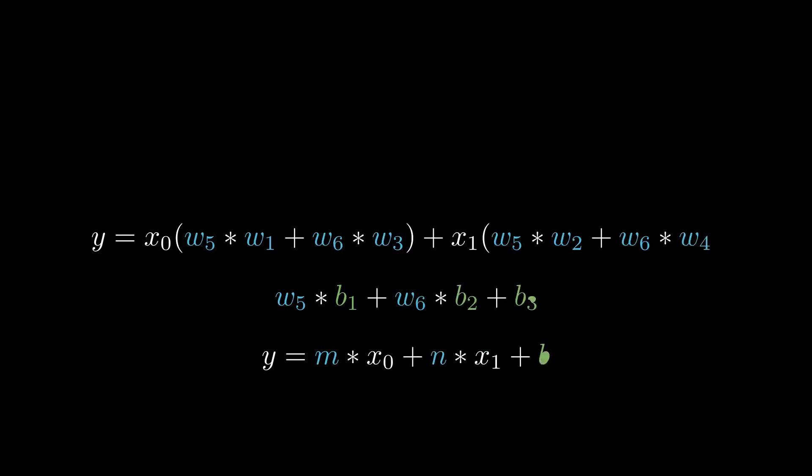We can write the output of each node as such. And if we substitute our middle layer into our output equation and expand our brackets, we can collect our coefficients of x0 and x1, which are our inputs, and group together the constants. We can generalize our equation to that of a linear relation between inputs.